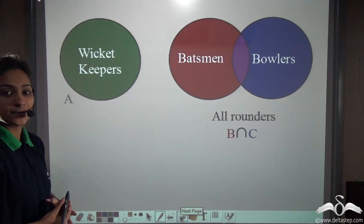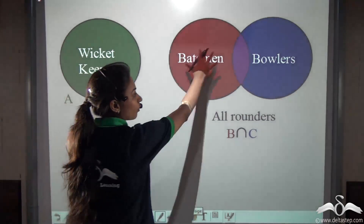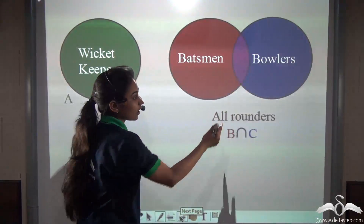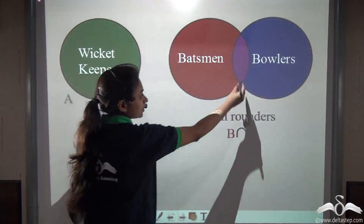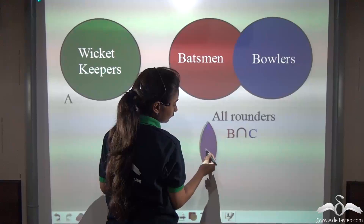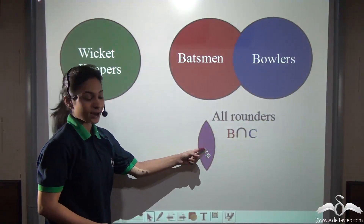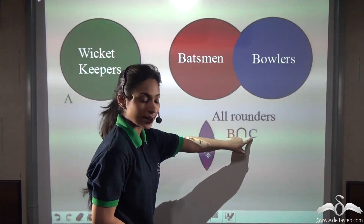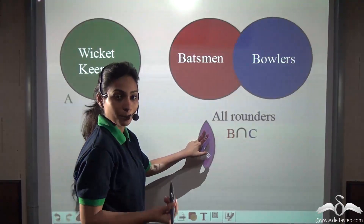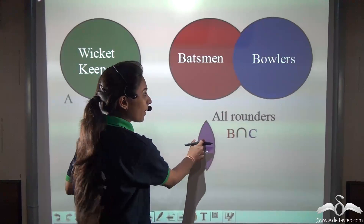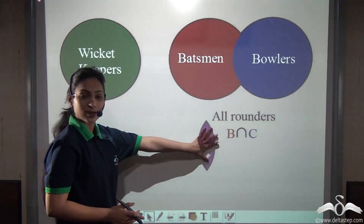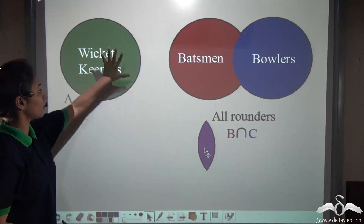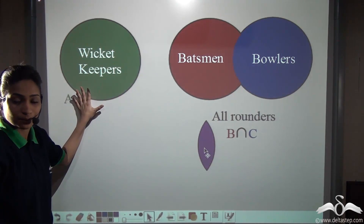So if you put that in sets, you wanted something like this: a set of all rounders that were batsmen and bowlers both. This means B intersection C — people or players who are both batsmen and bowlers. So you wanted some all rounders like this, and with them you needed some wicket keepers as well.